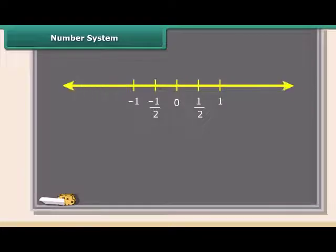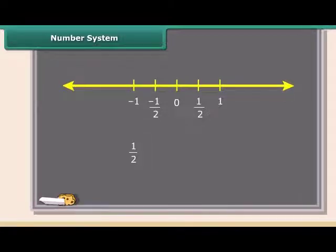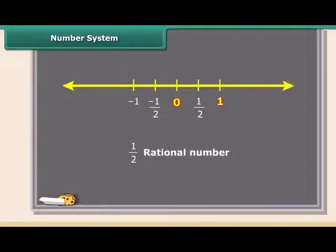Students, what about 1 by 2? Is it a whole number, natural number, or an integer? You can see 1 by 2 lies between 0 and 1. We call it a rational number.